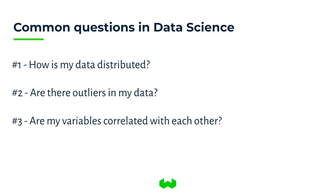So what are some common questions in data science? We typically have something we're observing, like the number of impressions we're getting for our tweets or views for YouTube videos. We ask questions like: how is my data distributed — is it normally distributed, power law distributed? Are there particular outliers? And the key question I want everyone to focus on is: are my variables correlated with each other? For example, we're interested in impressions on tweets, and we also look at variables like what time the tweet was sent or whether it contains a URL.